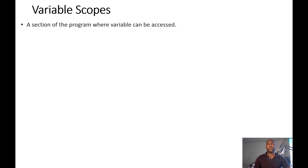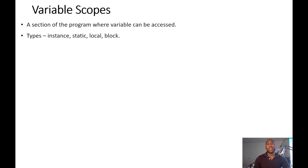Variable scopes are a section of your program where variables are available and accessible. There are basically four types of variable scope.